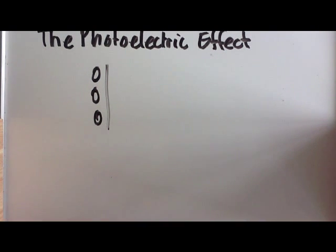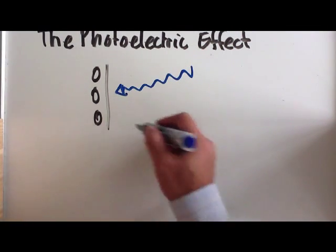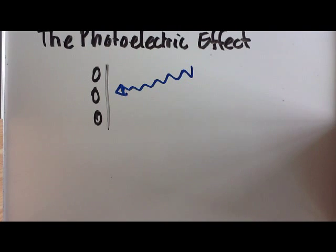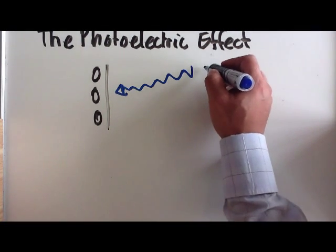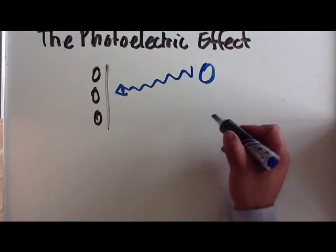When we shine light on that surface, these electrons are then released from that metal surface. Now the light that comes in comes in the form of photons. So if you look at that, that's a photon of energy, a particle of light.